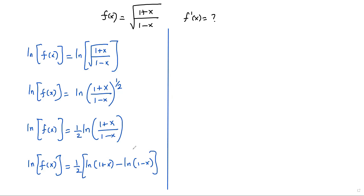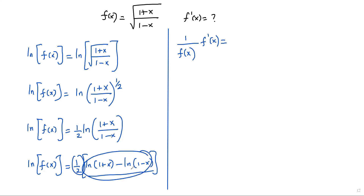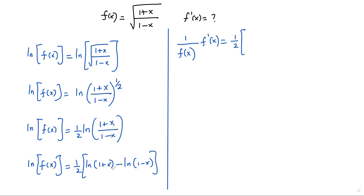Finding the derivative on both sides with respect to x: the derivative of ln(f(x)) gives (1/f(x)) · f'(x) by the chain rule — whenever I find the derivative of a natural logarithm, I put 1 in the numerator and the argument in the denominator. On the right side, (1/2) is a constant multiplied by the variable part, so the constant stays and I take the derivative of ln(1+x), which gives 1/(1+x).